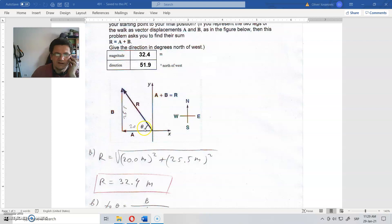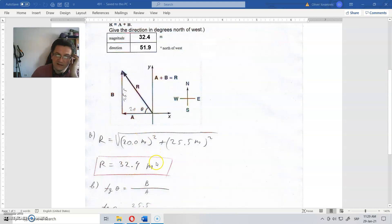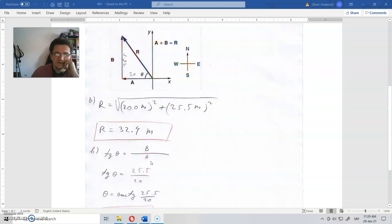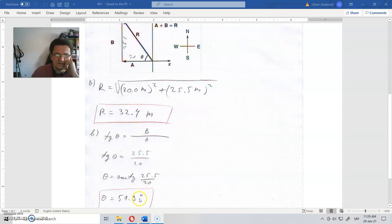And now, this angle here, they say north of west. That should be this angle here. That is actually north of west. That is theta. Tangent of this angle, as you can see, is when you divide this side with this one. Tangent of theta is B divided by A, and that is 25 divided by 20 meters, and that is 51.9 degrees.